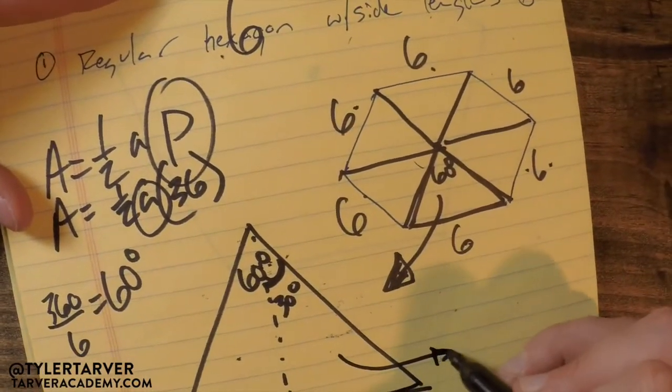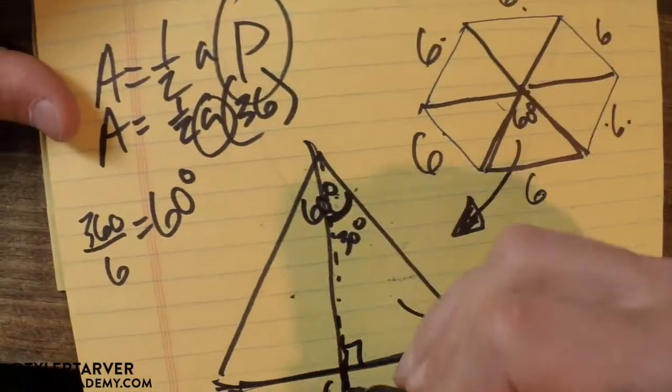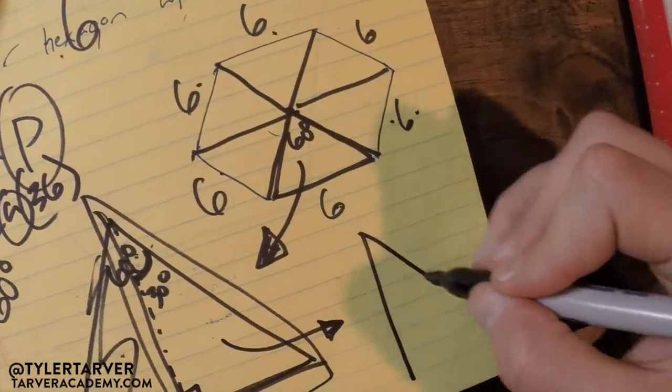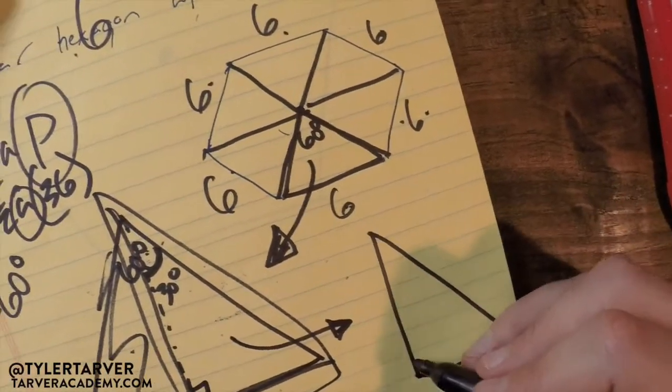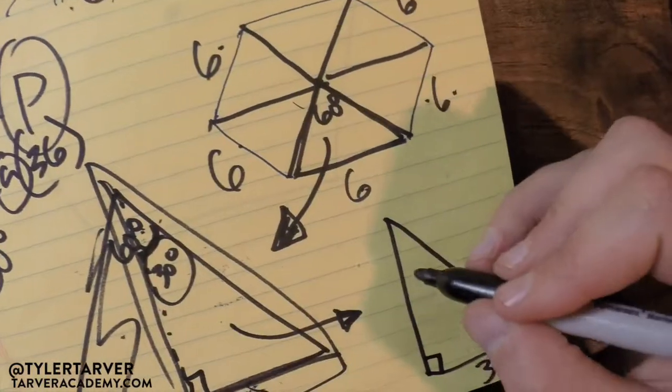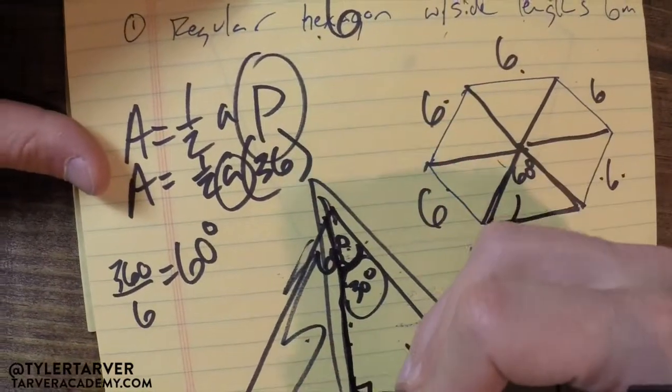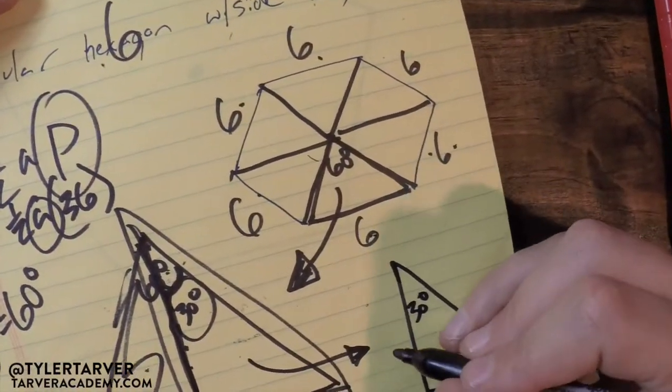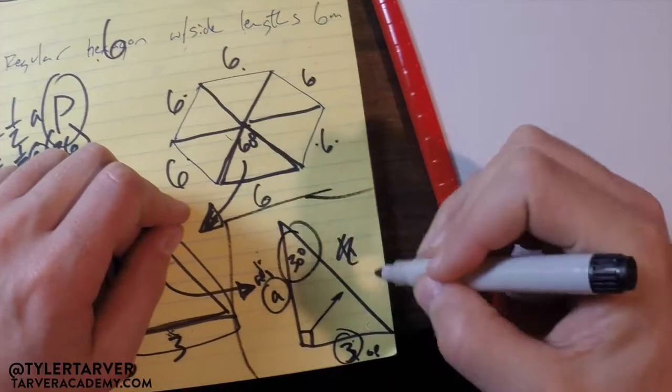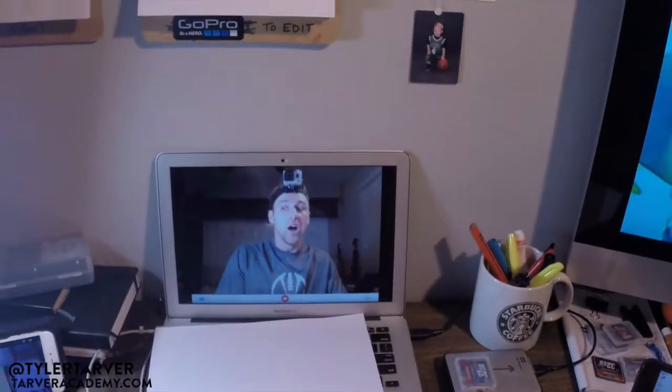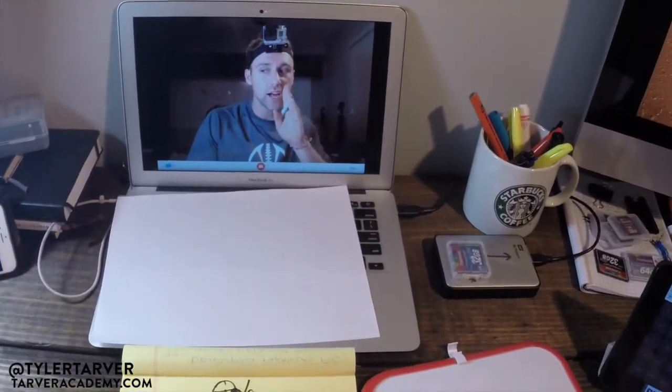So I could even redraw this triangle. This triangle right here, because I don't need this anymore. Always cut out the stuff. I'm a big fan of minimalists whenever you're working on problems. I know that's three. I know that's 30. Now I need to find what? This. That's my apothem. You notice this is 30. That's 90. You know this has to be 60. That's a special right triangle.